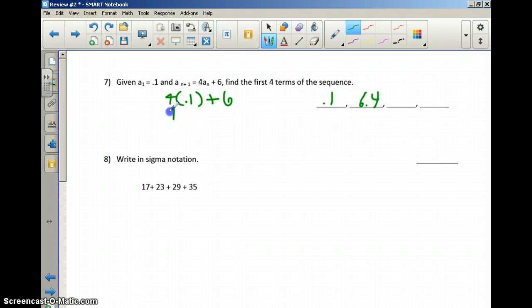Now I'm going to say 4 times 6.4. And then I'm going to add 6 to that. And that's going to generate a value of 31.6. Then I will say 4 times the 31.6 plus 6. The final number in this sequence that they asked for is 132.4.